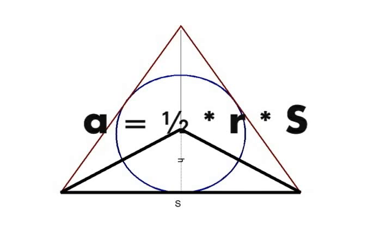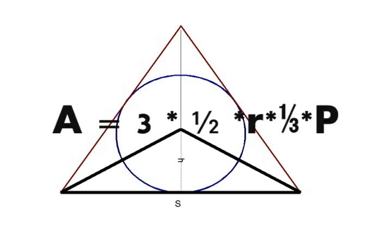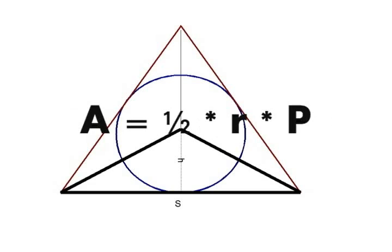I'm going to make one more substitution, which seems complicated right now, but you'll see how it actually simplifies things in the end. The base, or the side of the triangle, is actually equal to one-third of the perimeter of the triangle. Since the triangle is equilateral — as in any regular polygon — all the sides are the same length, and there are three sides, therefore the side is one-third times the perimeter. Therefore, the area of the triangle equals three times one-half times the radius times one-third the perimeter. The three and the one-third cancel out, and you're left with area equals one-half rp, where p is the perimeter of the triangle and r is the radius of the circle.